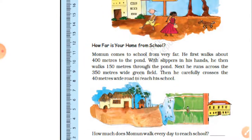Next question: how much does Momin walk every day to reach the school? Momin comes to school from very far. He first walks about 400 meters to the pond with his slippers in his hand. He then walks 150 meters through the pond. Next, he runs across a 350 meters wide green field.